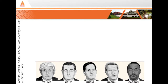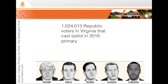I'll begin with an example from the 2016 presidential primary race. In the spring of 2016, the Republican primary race had five main contenders: Donald Trump, Ted Cruz, Marco Rubio, John Kasich, and Ben Carson. During the primary election in Virginia, 1,024,013 Republican voters cast votes for a candidate. Those 1,024,013 votes represent every single vote cast in that election. Therefore, because it represents every person included within our target group — Republicans in Virginia that voted in spring 2016 — we call that the population.